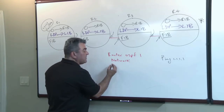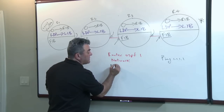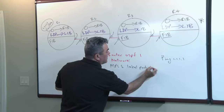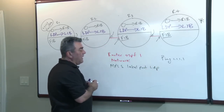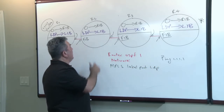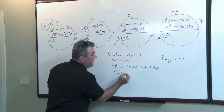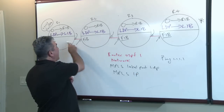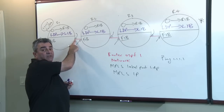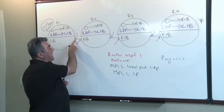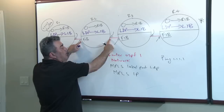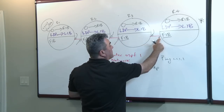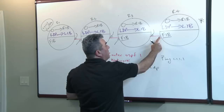In global config mode, I'm going to configure the routers with 'mpls label protocol ldp', and I'm going to run LDP on the links using the 'mpls ip' interface command. For example, on the interface of router 1 I use 'mpls ip'; on the two interfaces of router 2 I use 'mpls ip'; same on router 3's interfaces, and of course 'mpls ip' on router 4's interface.